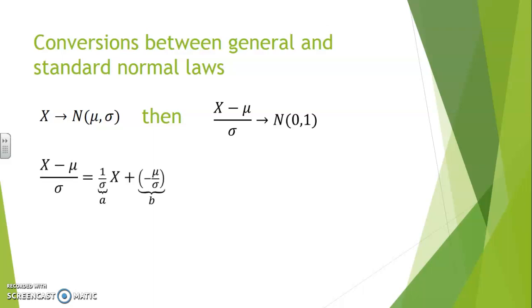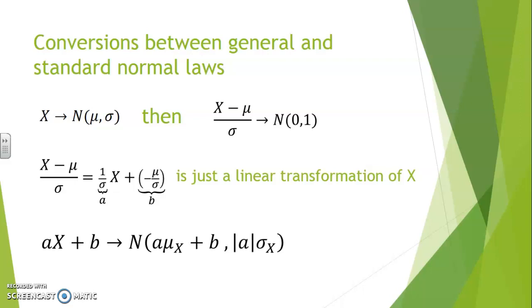To recognize this, you can look at X minus mu over sigma as a linear transformation, where 1 over sigma is acting as the a, and minus mu over sigma is acting as the b. According to the properties we stated earlier, then aX plus b will remain normal because X was normal in the first place.